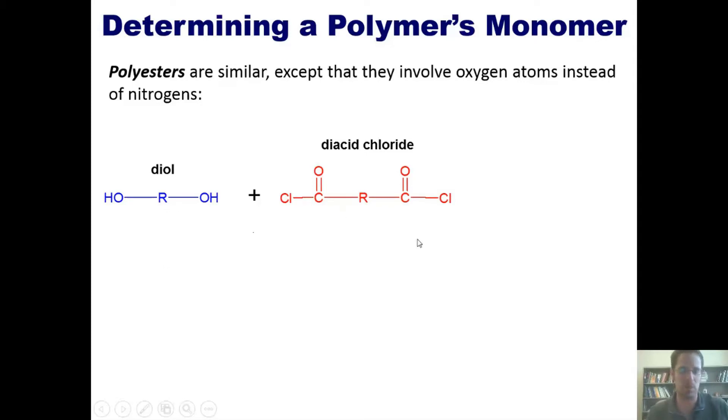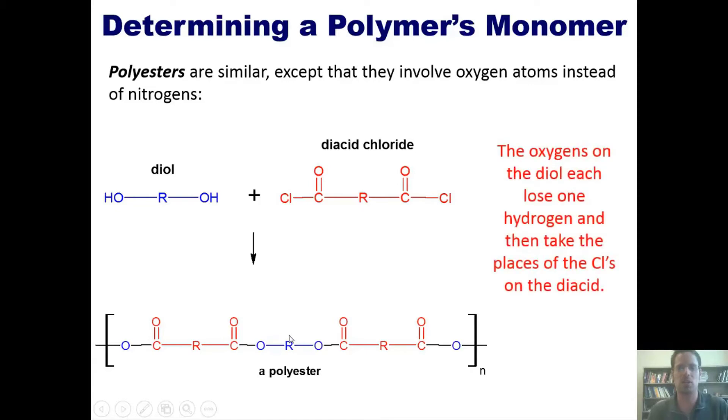If you react these two together, just like the nylons we saw in the previous slide, they can form this type of polymer, where I've got the oxygens taking the places of the chlorines in the diacid chlorides in a repeating unit over and over and over. Just like with the nitrogen, the oxygens each lose a hydrogen and then replace the chlorines on the diacid. This is what the generic structure of a polyester looks like.